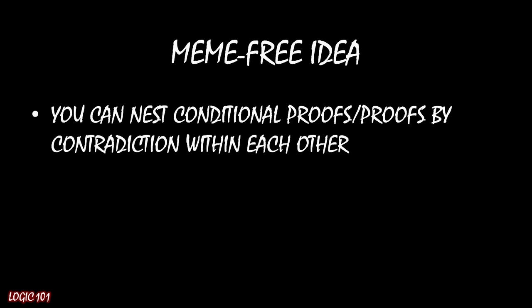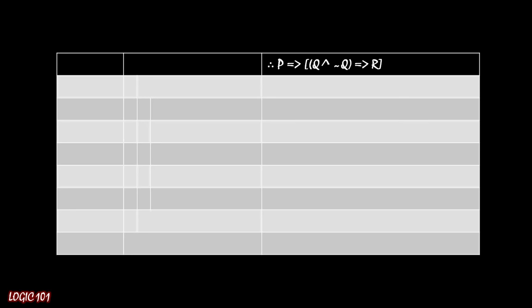You can have a proof by contradiction inside of a conditional proof. And to see why this might be useful, let's look at an example. Imagine that we were trying to prove the tautology P implies ((Q ∧ ¬Q) => R). Well, given what we talked about last time, if we're looking at tautologies, that means we have to start off by either having a conditional proof or a proof by contradiction to give us something to work with. We don't have any premises here to start off with.